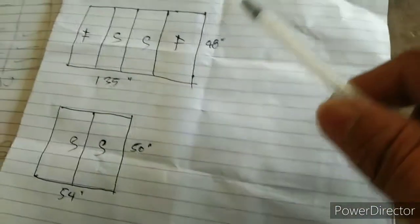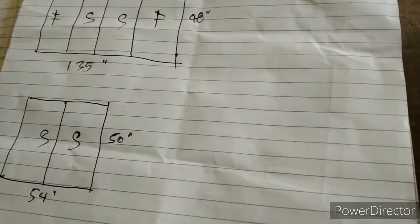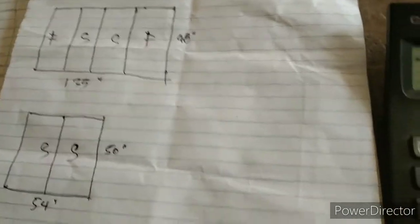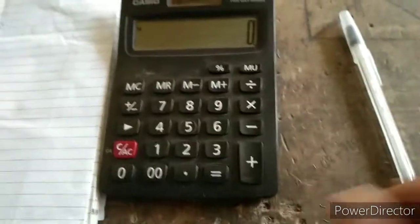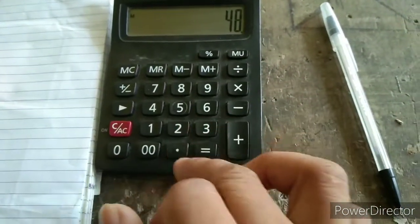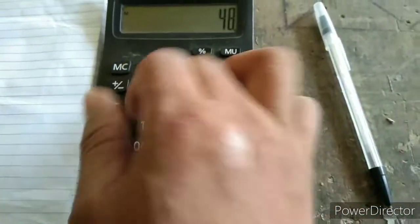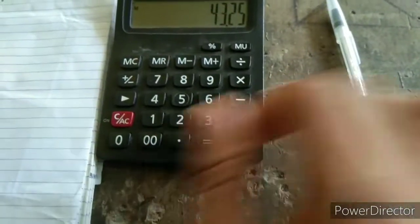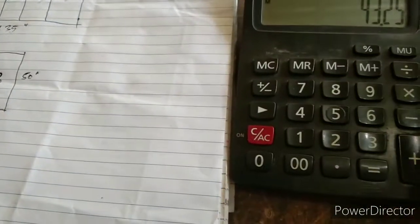Dito naman tayo sa ating patayo. Bali, sa siminto tayo, guys, sa opening to — ang ating ibabawas. So, bali, itong 48, bawasan natin ng 4.75, para makuha natin yung sukat ng glass natin. I-calculate natin: 48 minus 4.75, equals 43.25, guys.